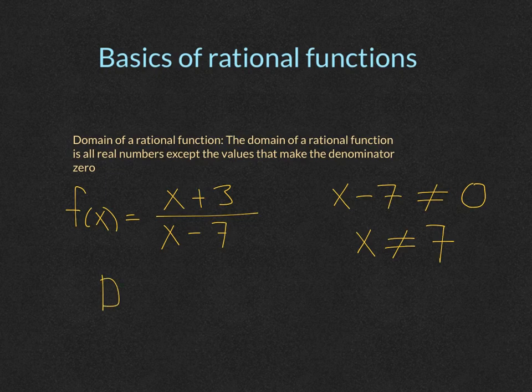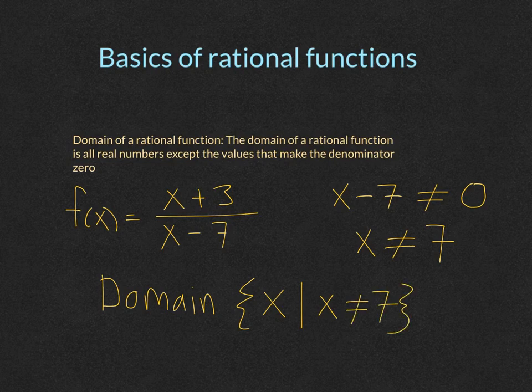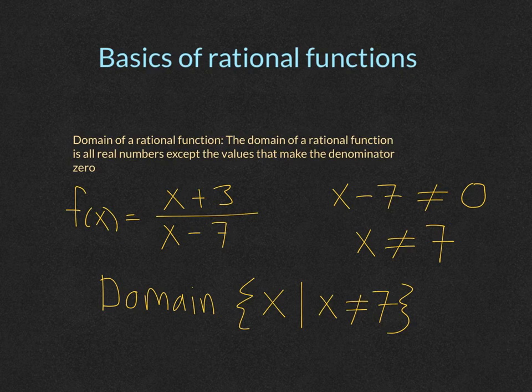So the domain here would be all values of x except for x cannot equal seven. It's the set builder notation that says x can be all values except for seven.